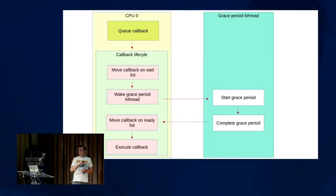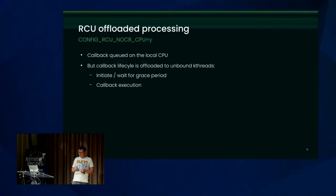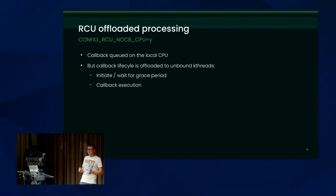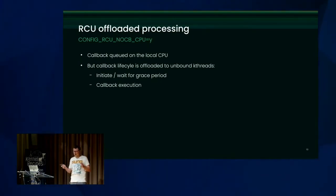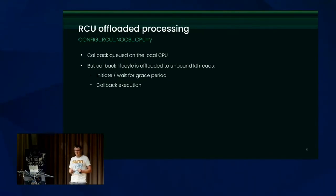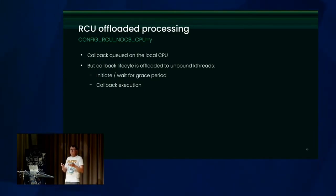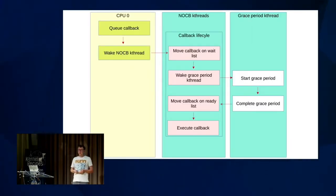This is what you have on most kernel configurations. But on some cases, you have a slightly different behavior called RCU offloaded callbacks. On this kind of configuration — available via kconfig, called RCU_NO_CB — the callbacks are queued from the update side, still on CPU zero, but then the callback lifecycle is handled by a kthread, which is the offloaded part.